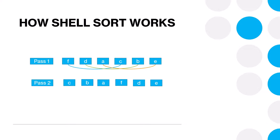In pass 2, we will reduce the gap to 2. We will now check every second element: the element at index 0 with index 2, index 1 with index 3, index 2 with index 4, and index 3 with index 5. Again some swapping will be done and we'll end up with updated data.